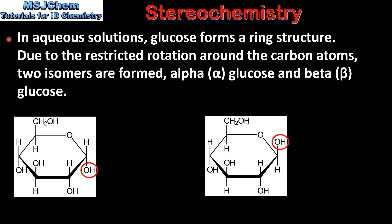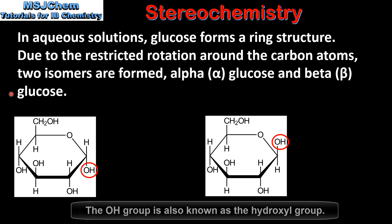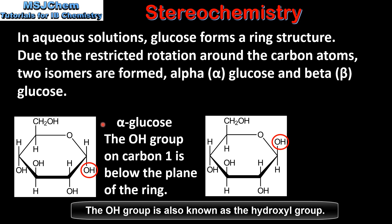In aqueous solutions glucose forms a ring structure. Due to the restricted rotation around the carbon atoms, two isomers are formed: alpha-glucose and beta-glucose. In alpha-glucose the OH group on carbon number one is below the plane of the ring.